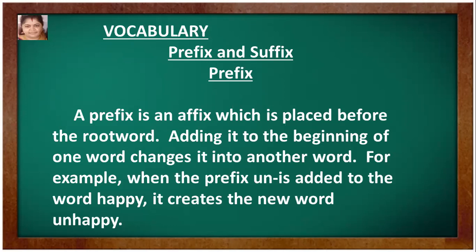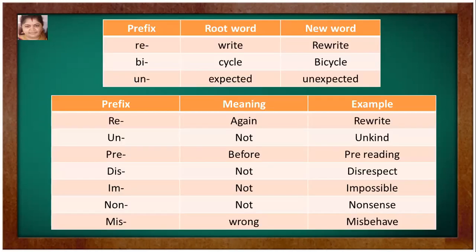For example, when the prefix 'un' is added to the word happy, it creates the new word unhappy. Re + write = rewrite. Bi + cycle = bicycle. Un + expected = unexpected.